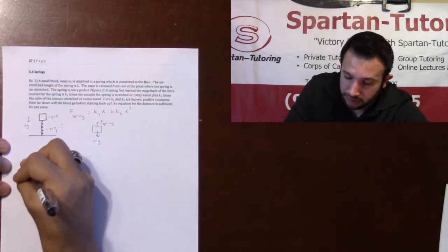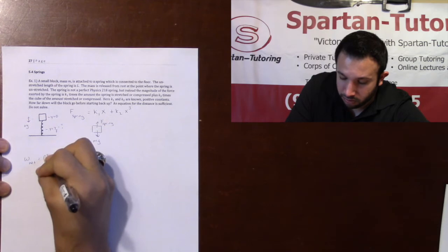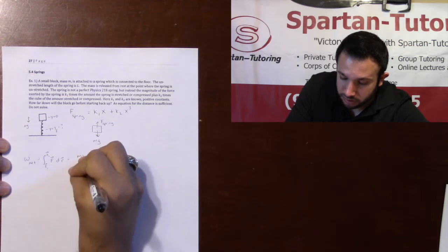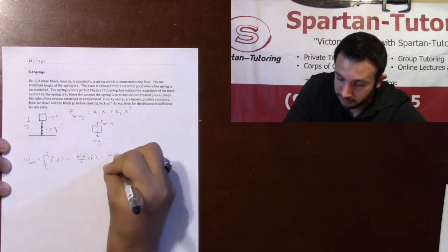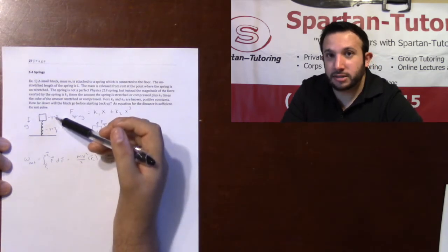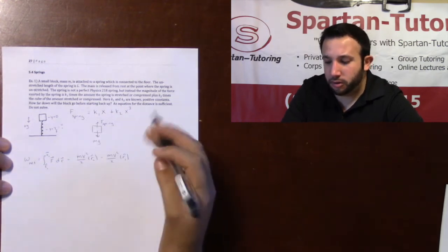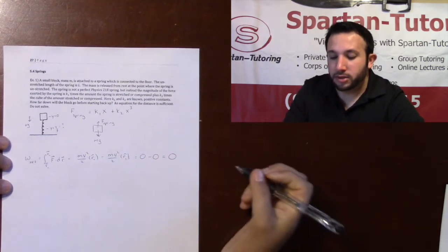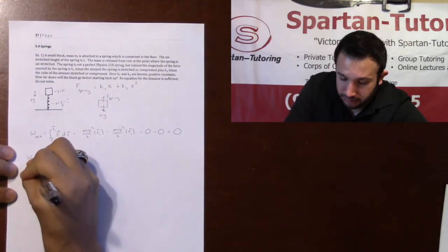First, I'll find the net work. Net work is the integral from r1 to r2 of F dotted with dr, which equals mv²/2 at r2 minus mv²/2 at r1. Notice that at the initial position velocity is zero — it starts from rest — and at the final position the velocity is also zero, since we want to find where it turns around. So the net work done is zero.